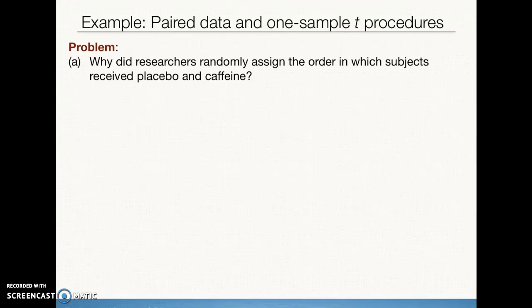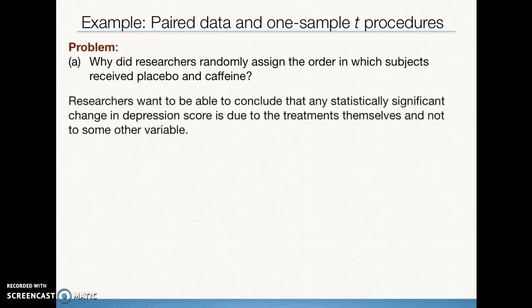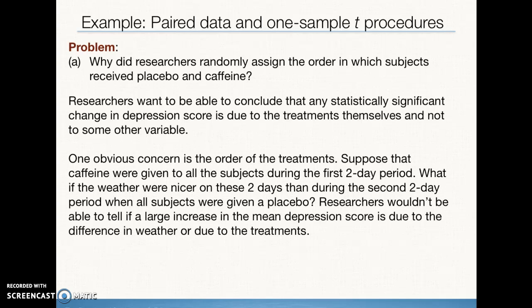Why did researchers randomly assign the order in which subjects receive placebo and caffeine? You may have thought of this when you were reading the question, but basically the researchers want to be able to determine that the difference actually occurred from the difference in caffeine level compared with the perception of difference in caffeine level by the participants in the study. So if they didn't know which one they were getting, the placebo or the caffeine capsules, and the order was randomized, then truly the only difference that we would see in their depression level should be attributable to the difference in caffeine level.